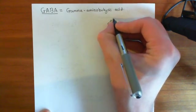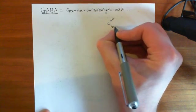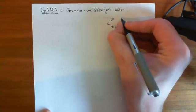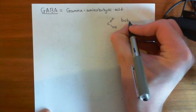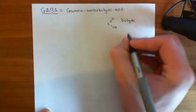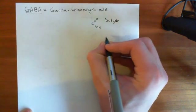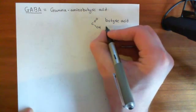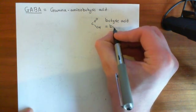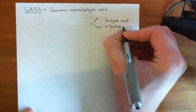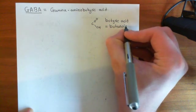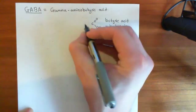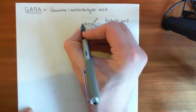It's butyric acid. Butyric acid is the old name for butanoic acid. So butyric acid is equal to what would now be known as butanoic acid. It's a four-carbon carboxylic acid.